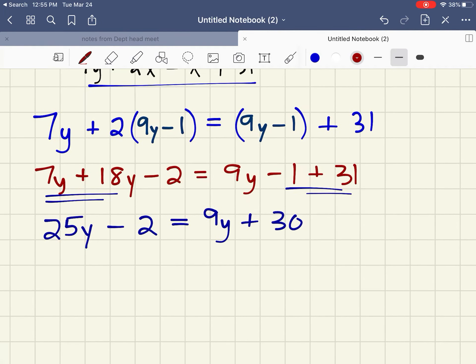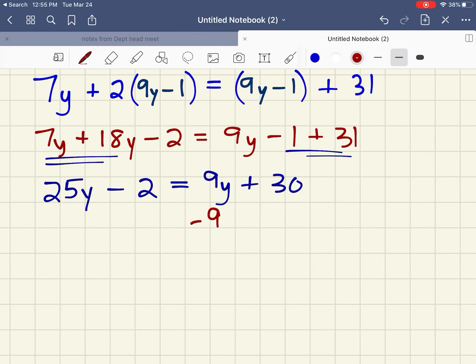I have variables on both sides. I really like to take care of this all at the same time. I'm going to subtract 9y, but also add 2. So if I have 25y minus 9y, there's 16y. The 2s cancel, 9y's cancel. I get 32.